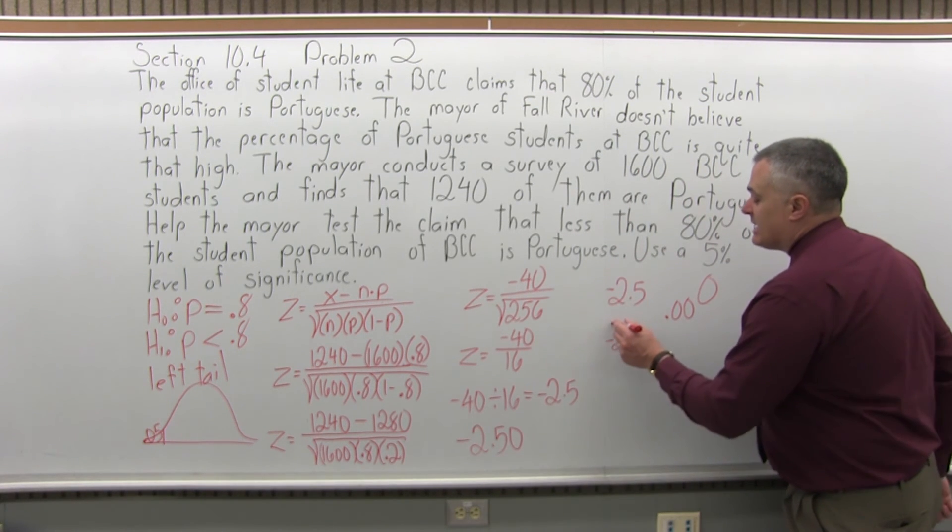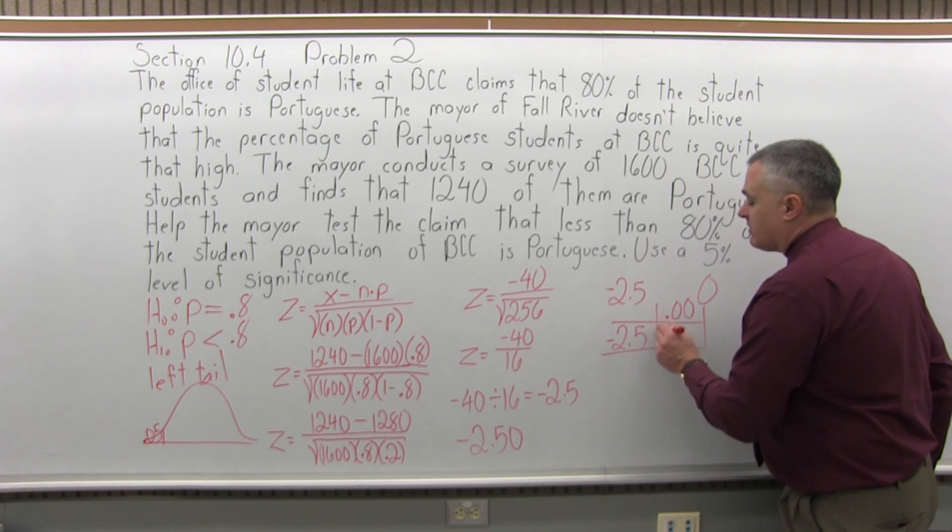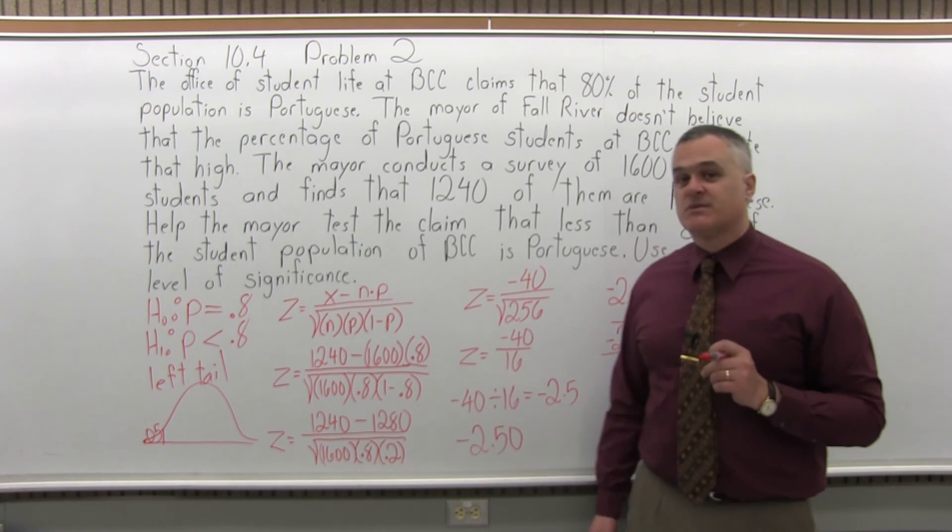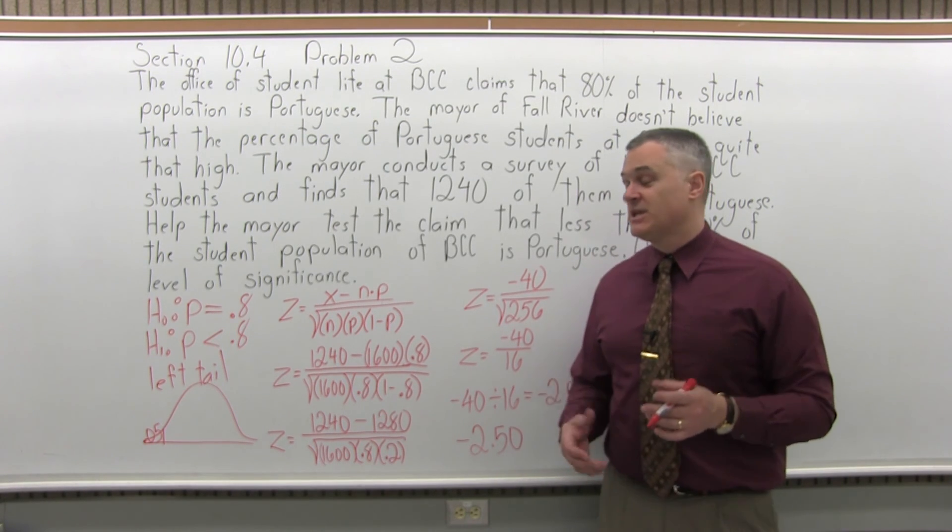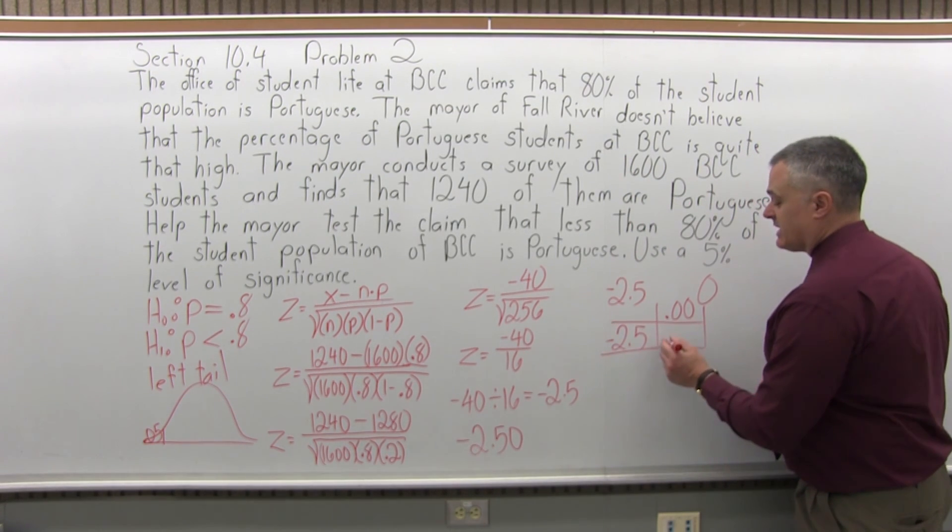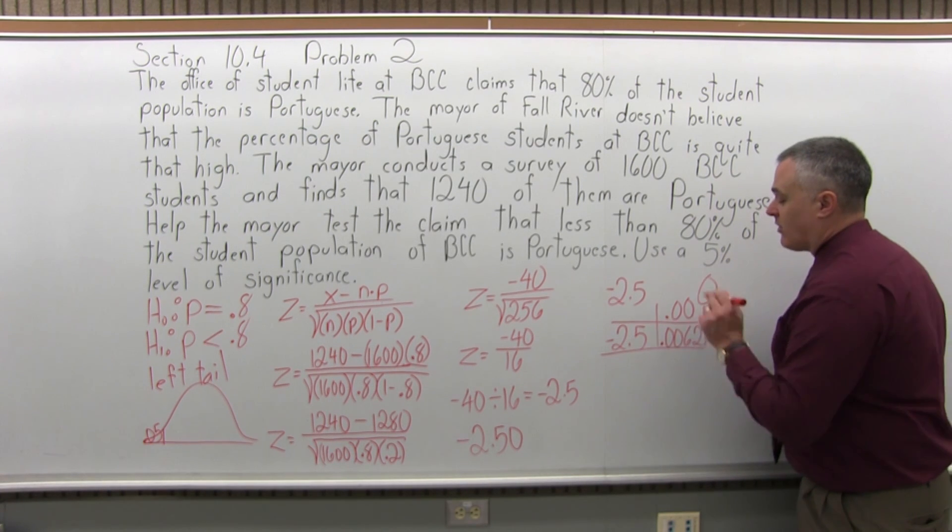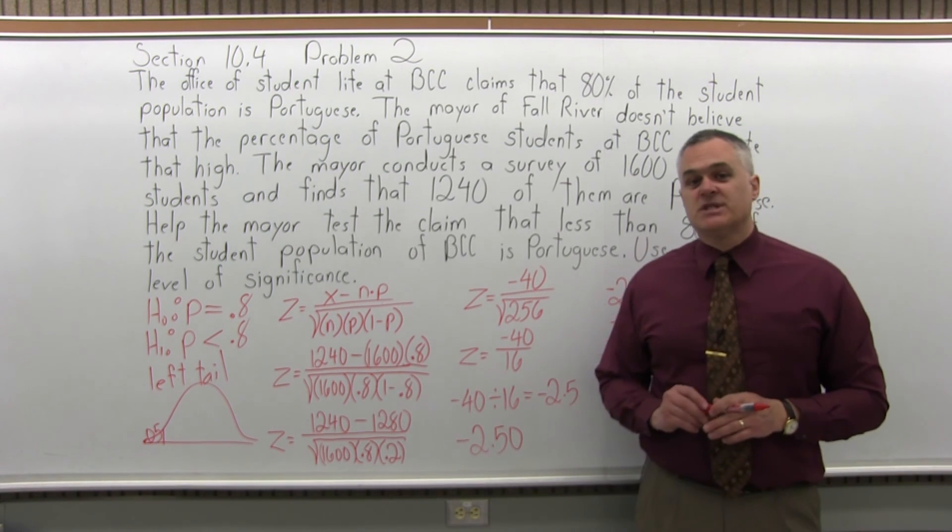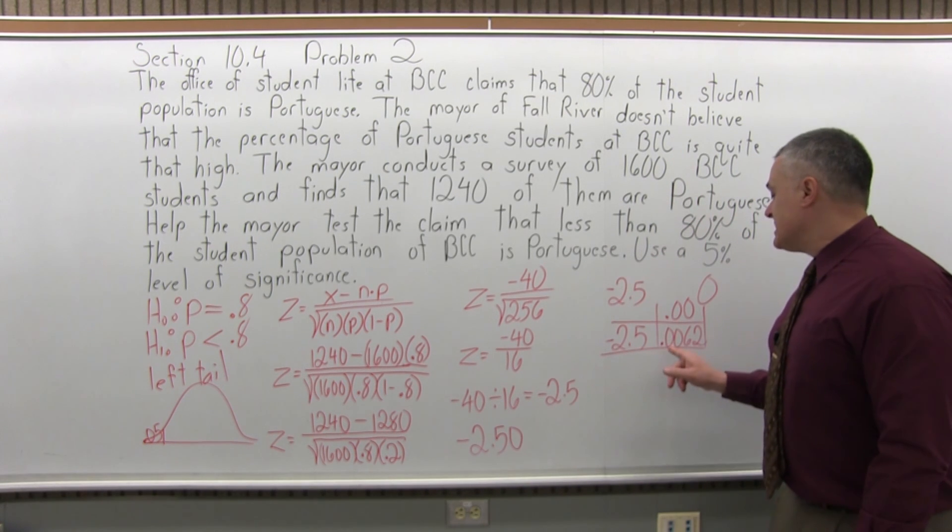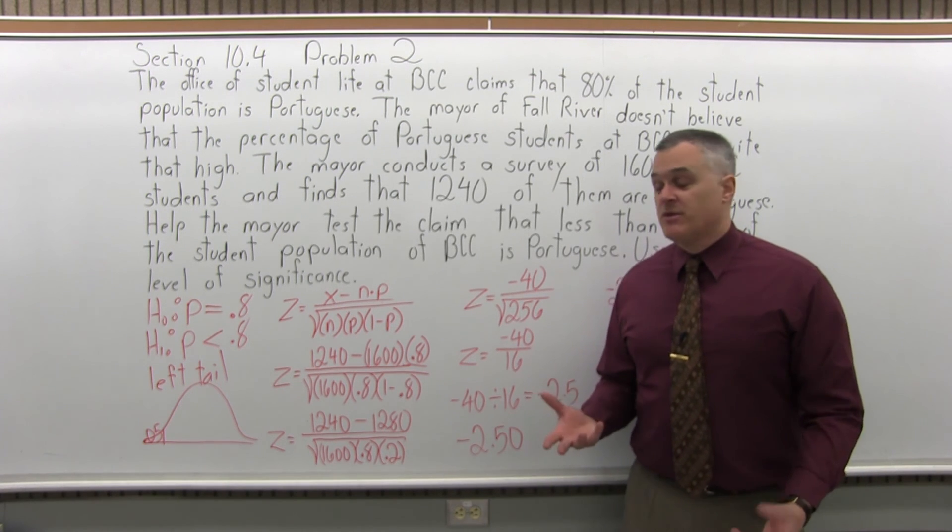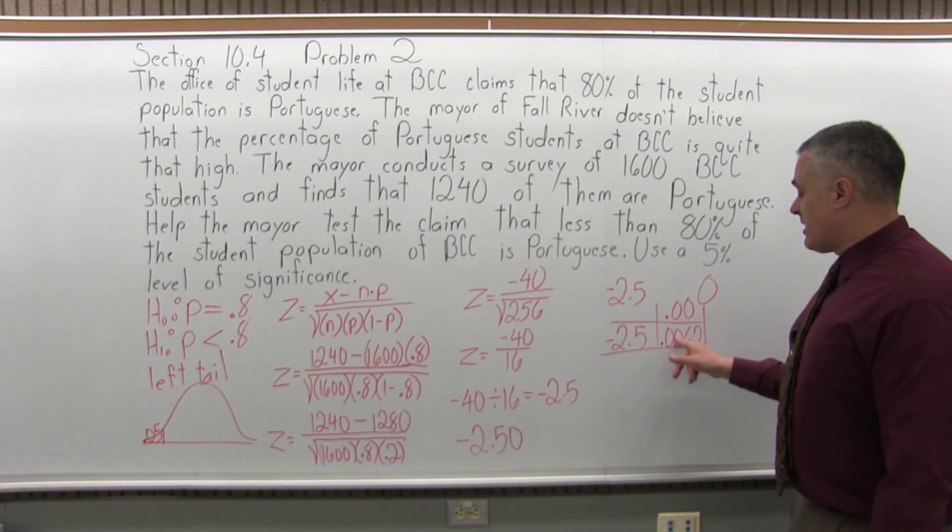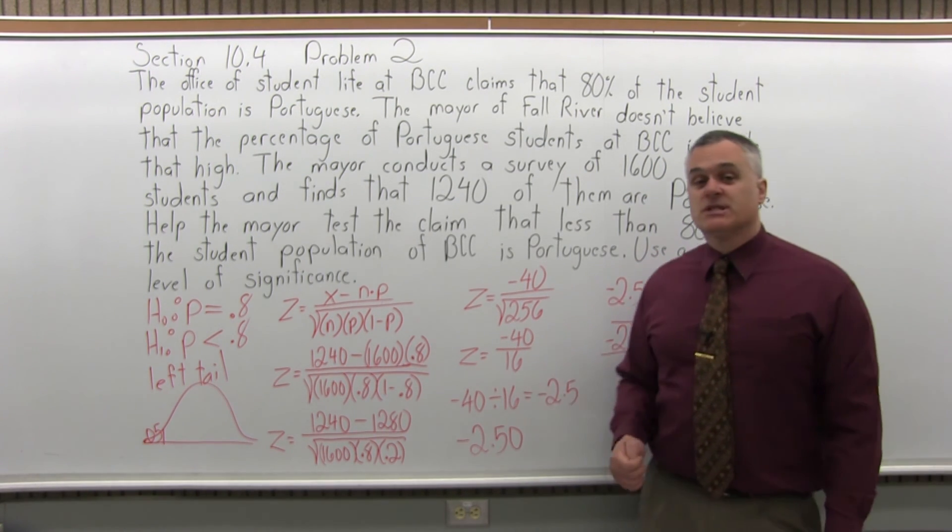Find your negative 2.5 row in the .00 column and see where they intersect. Here's where it's especially important that you don't lose the negative because there's two pages for the chart. There's a positive page, negative page. Make sure you're on the negative page. When you intersect the negative 2.5 row with the .00 column, you'll see that they intersect at .0062. So step five is look up your value for Z in the chart. We looked it up and we got a value of .0062.